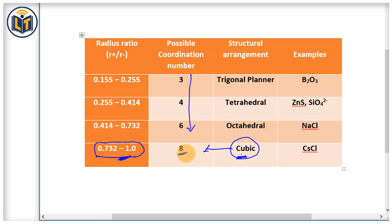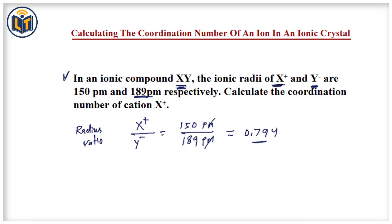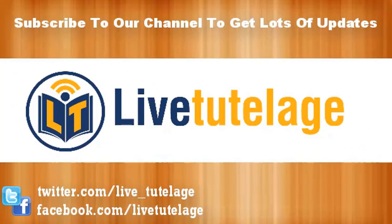These are the coordination numbers given for different structural arrangements of compounds. Here you can see that the coordination number of X+ ions will be 8. This is how we find out the coordination numbers by finding the radius ratio. The coordination number of X+ cations will be 8. Thank you.